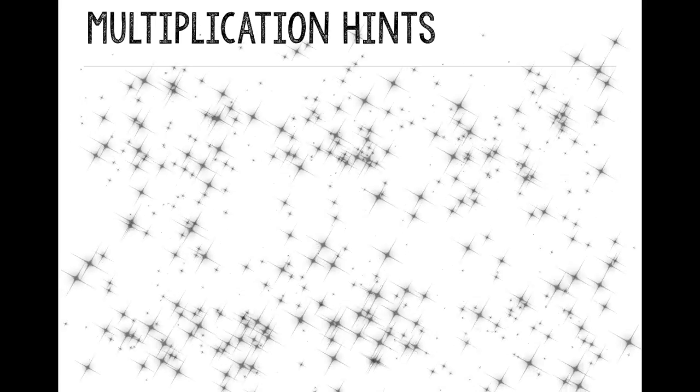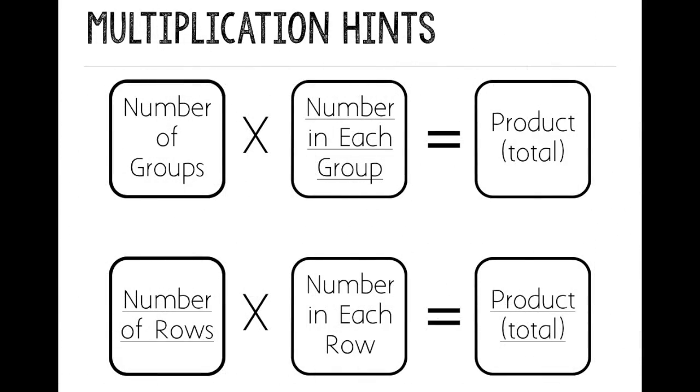Some hints when you're multiplying. Our first factor should be the number of groups, and we multiply it by the number in each group, and that equals our product or our total. If we're making an array, we multiply the number of rows times the number in each row to get our product or total.